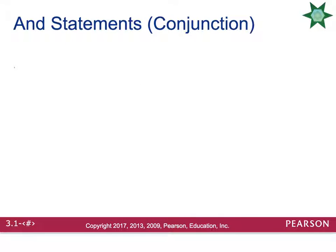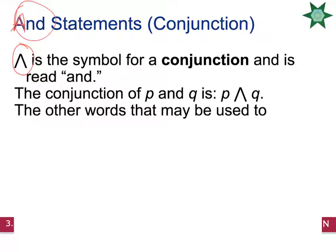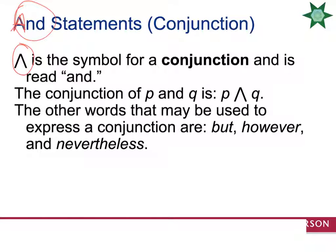And statements are called conjunctions. The symbol looks like an upside-down V (∧). An easy way to remember it means 'and' is that it looks like the letter A without the bar. So P ∧ Q is read as 'P and Q.' Other words that also express a conjunction include but, however, and nevertheless — all of which can be translated to 'and.'